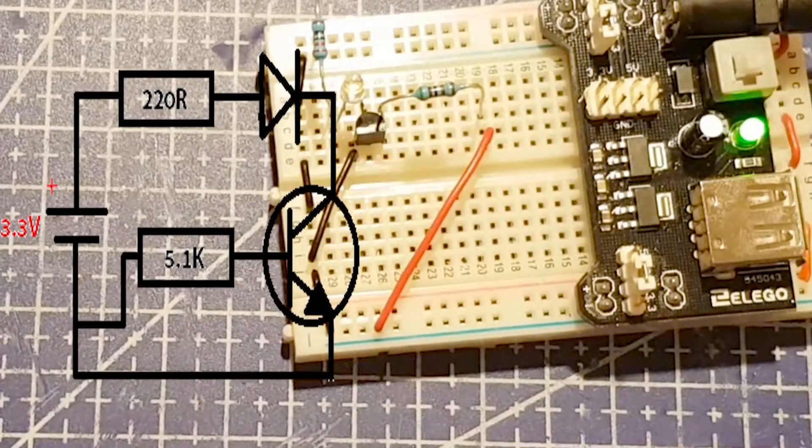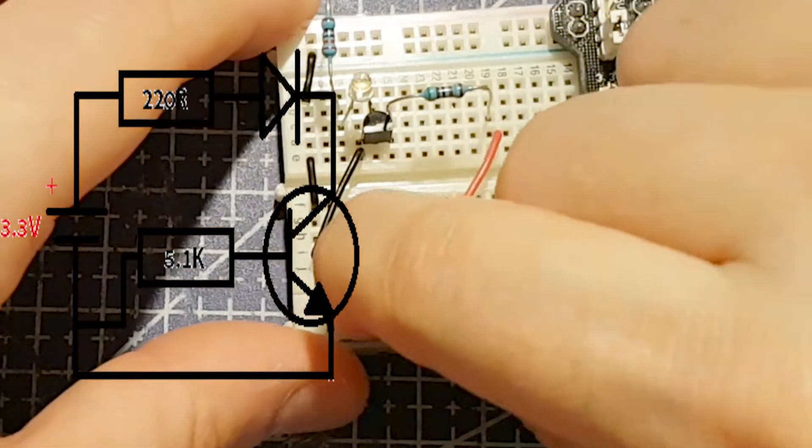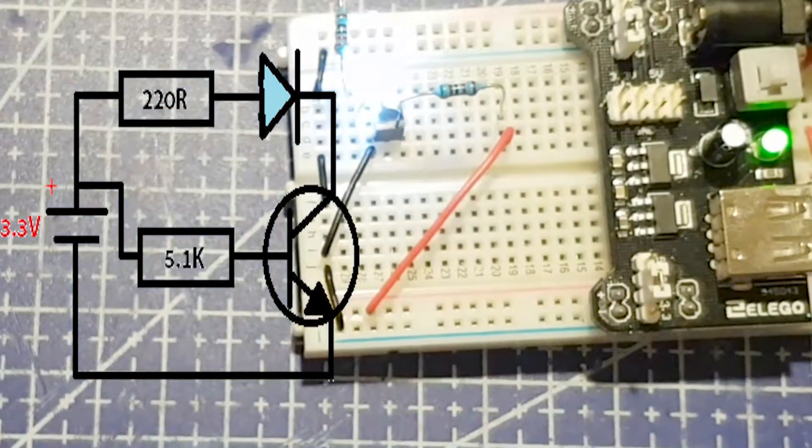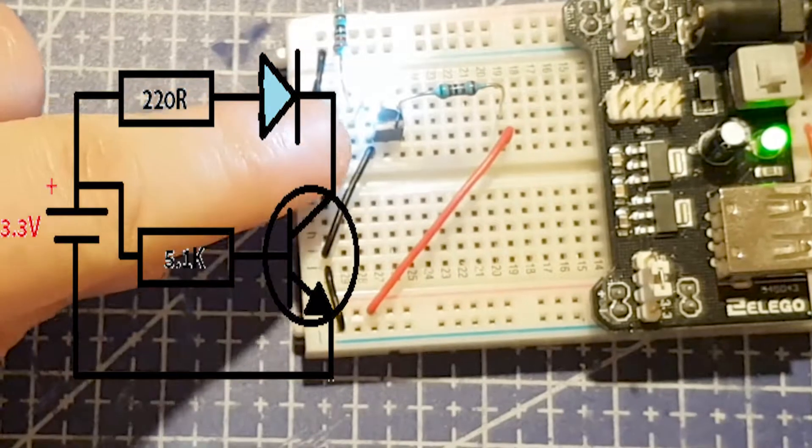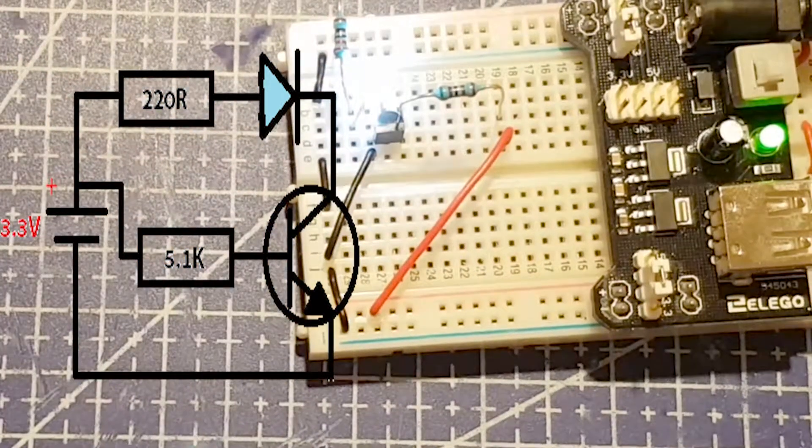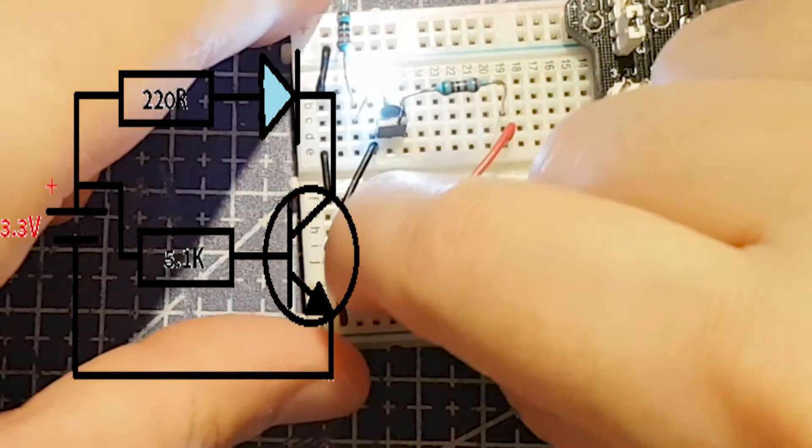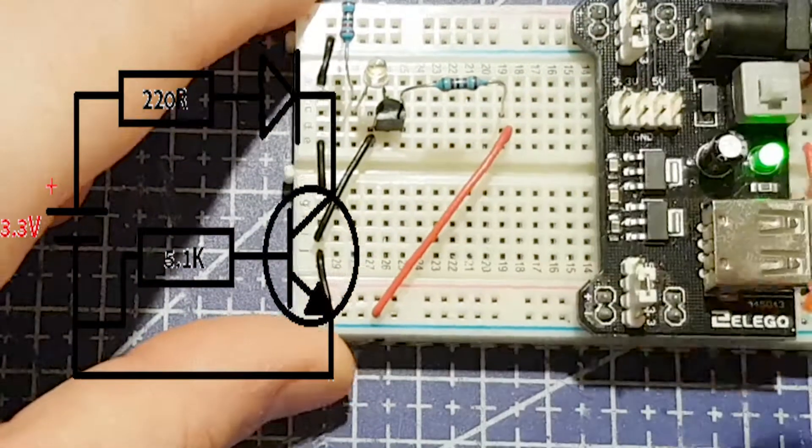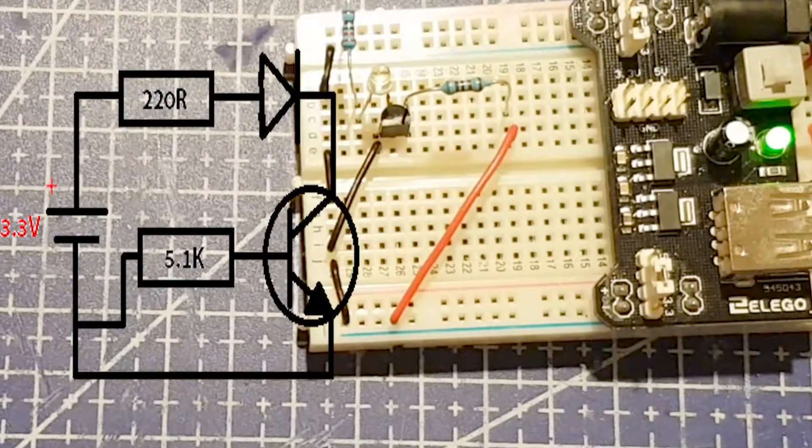Now we've asked to apply a current to the base of this transistor. It then allows current to flow through the collector to the emitter, creates a path to ground, and we have a lit LED. And again, if I was just to take that off, put that to ground. There we go, it's off. So that is an example of a digital switch.